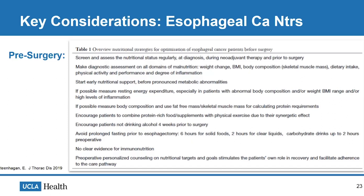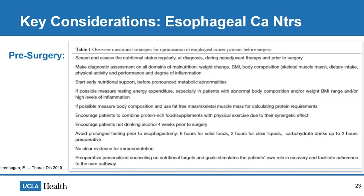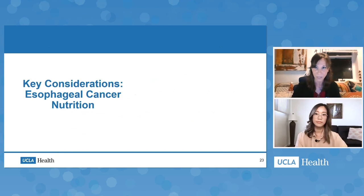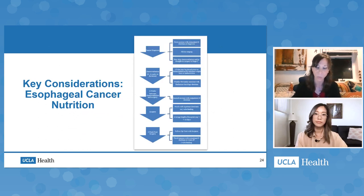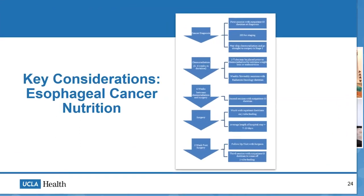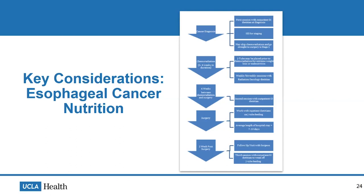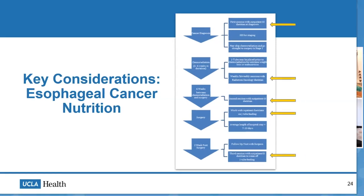Everyone in the multidisciplinary team needs to be involved in checking on nutrition status and malnutrition. It also emphasizes the importance of both adequate calories and adequate protein. Our plan starts at the time of diagnosis to help manage malnutrition as early as possible and stave off unnecessary weight and muscle losses. This is why seeing a dietitian is encouraged several times during the patient's treatment course, and this really helps to keep the whole team engaged in how the patient is doing nutritionally.